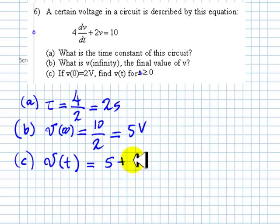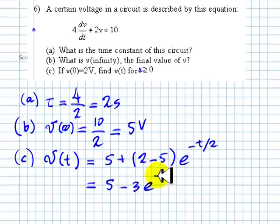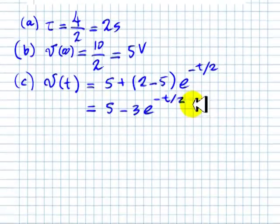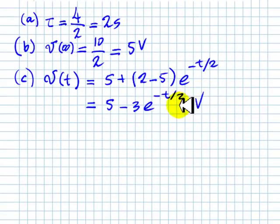And then, an exponential that goes initial value 2 minus final value 5, exponential negative t divided by the time constant 2 seconds. You want to write that better? Sure. That's going to be 5 minus 3e to the negative t over 2 volts. And that is the expression.